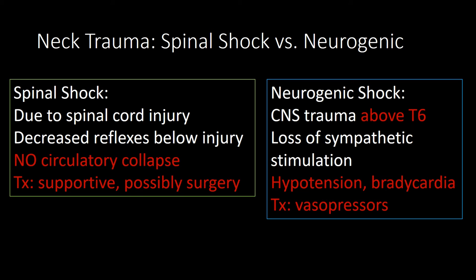Neurogenic shock is different — it's caused by CNS trauma in the brain or spinal cord above T6, causing loss of sympathetic stimulation to blood vessels. This leads to vasodilation, hypotension, and bradycardia from unopposed vagal activity. This can lead to organ failure and death if not treated promptly. Treatment is vasopressors, and sometimes atropine is added for bradycardia.